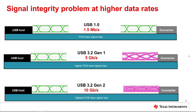USB redrivers are used to help maintain signal integrity, which is important for achieving maximum data throughput and electrical compliance. System impairments which include PCB trace loss, ISI, crosstalk, reflections, noise, and jitter can lower data rate throughput and can cause compliance failures.